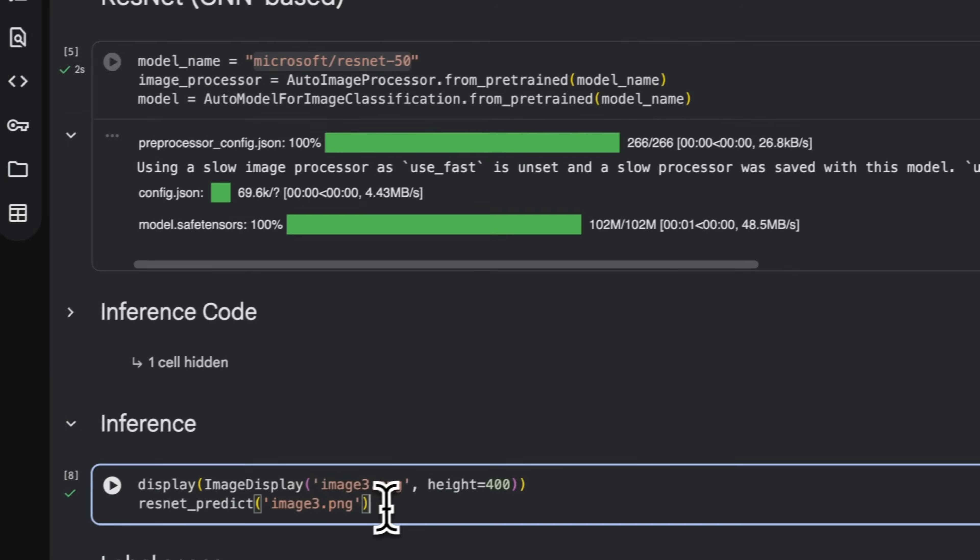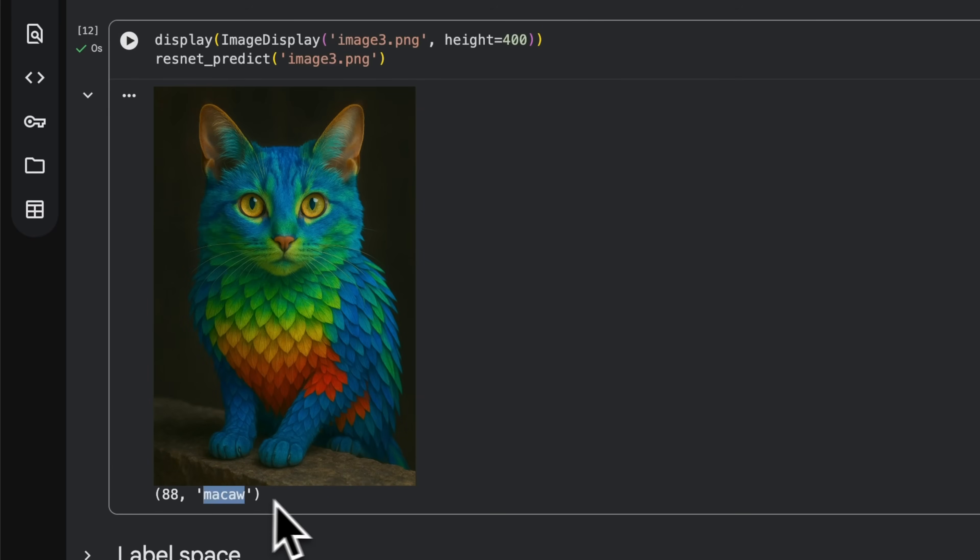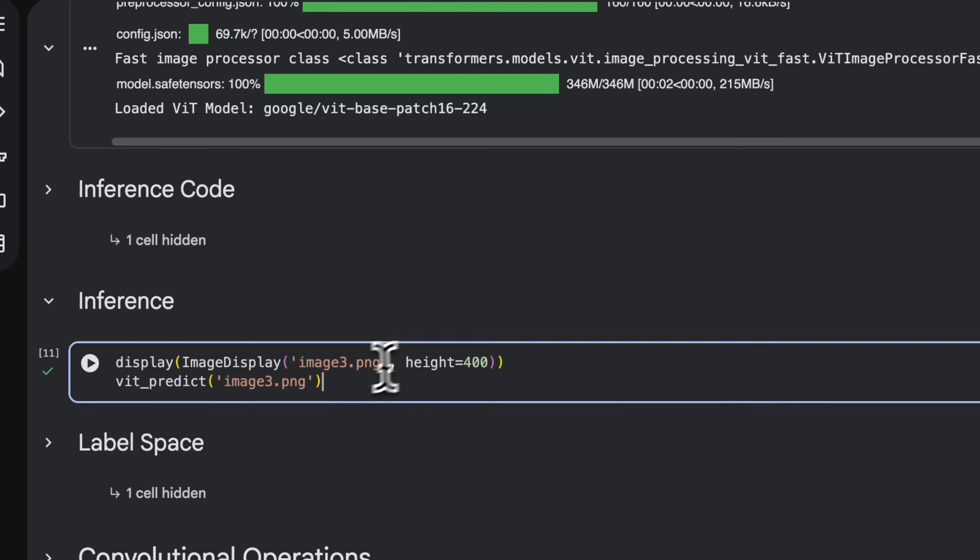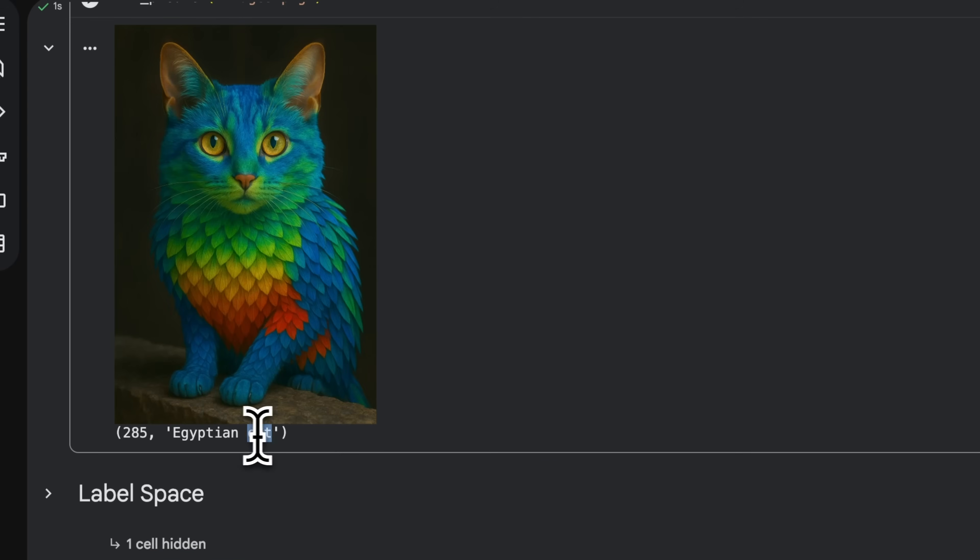But watch what happens when I show it to two of the world's best image classifiers. Microsoft's classic ResNet calls it a macaw, and Google's Vision Transformer classified it as an Egyptian cat. Same image, two different labels, and it all comes down to model architecture.